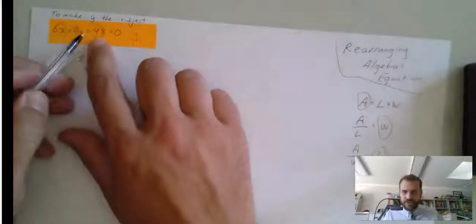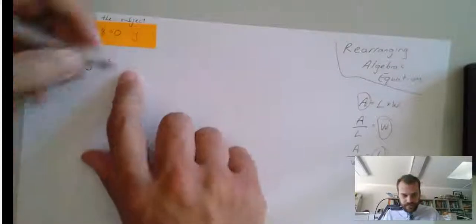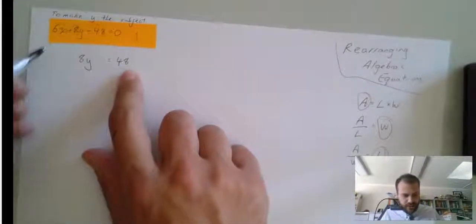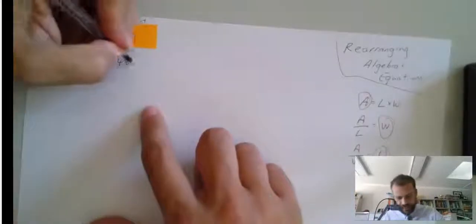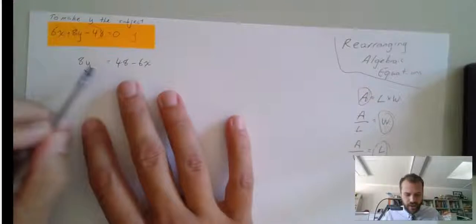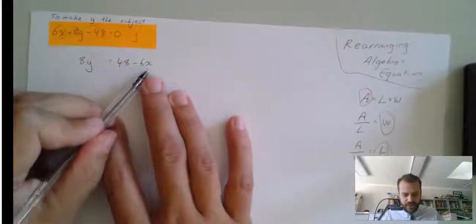What I'm really doing is adding 48 to both sides. We get positive 48, and subtracting 6x from both sides. So, now I have 8y equals 48 minus 6x.